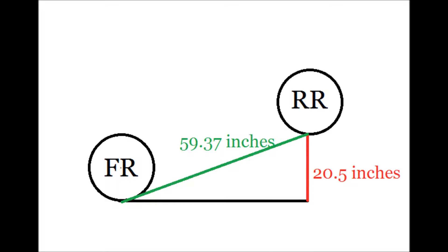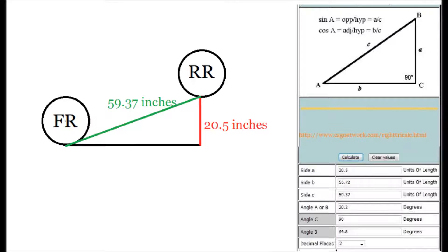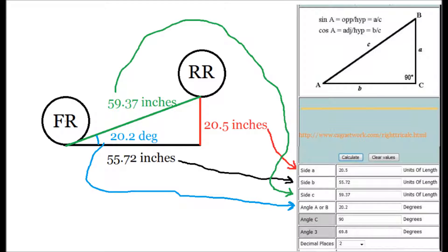So next thing is we're going to use an online calculator to find the distance or how long the black line is because it's going to be important for us. To find the black line we're going to use the online calculator, the link is right in the middle of it. Real easy to use. We're going to put 59.37 where it says side C, we're going to put 20.5 where it says side A, click calculate and it'll give you all the answers. It gives us for side B it's 55.72 inches and it'll actually give us the angle A as well which is 20.2 degrees.